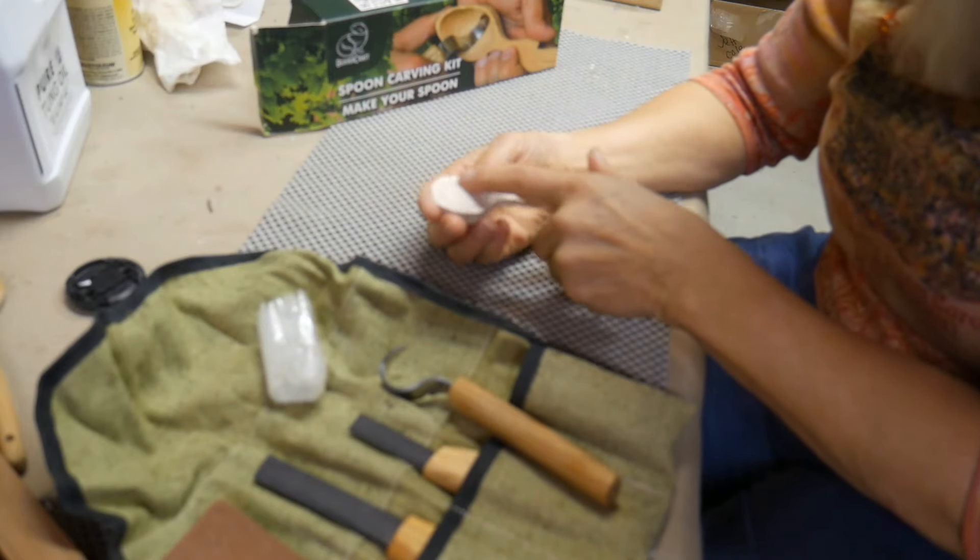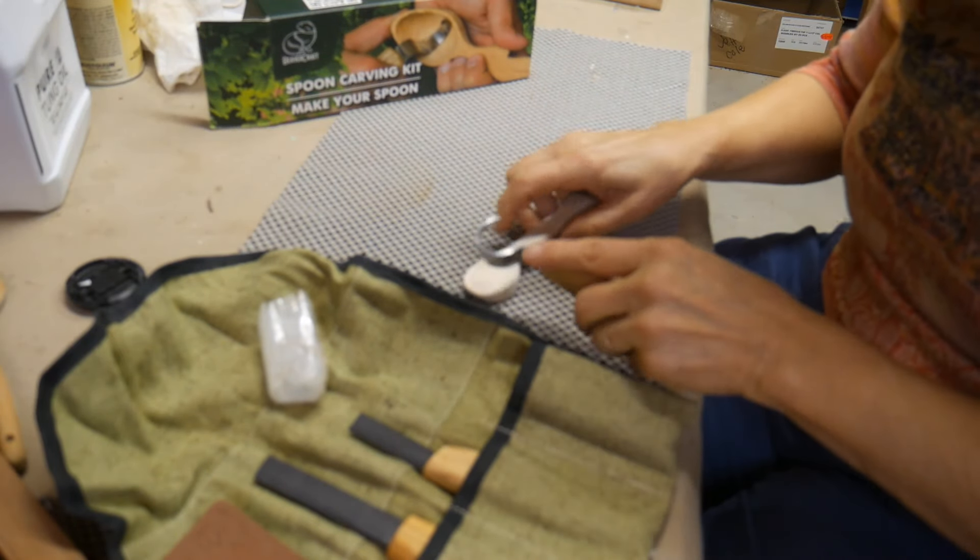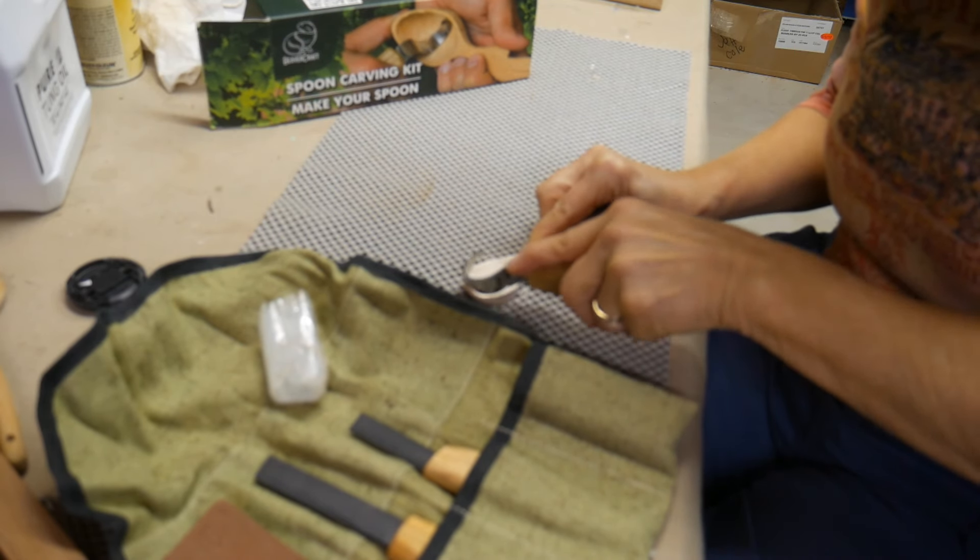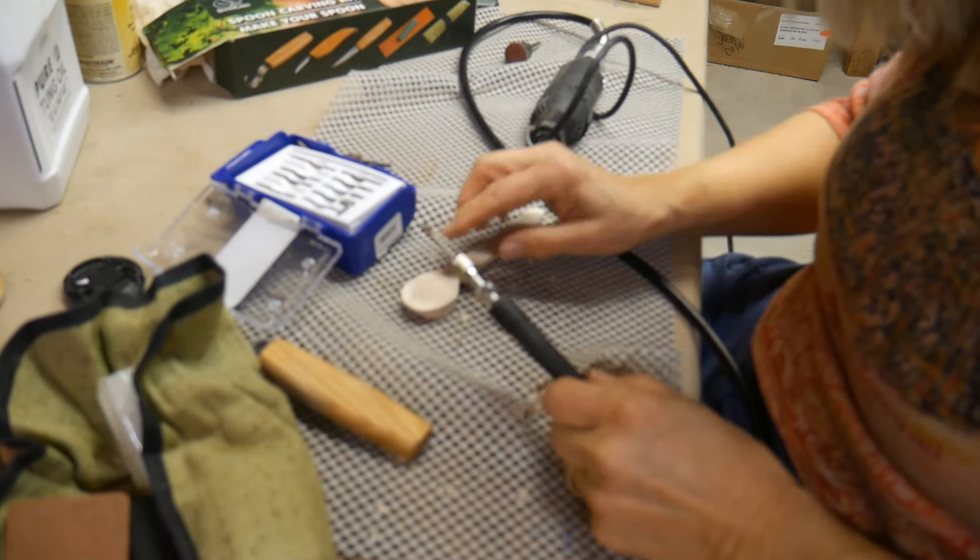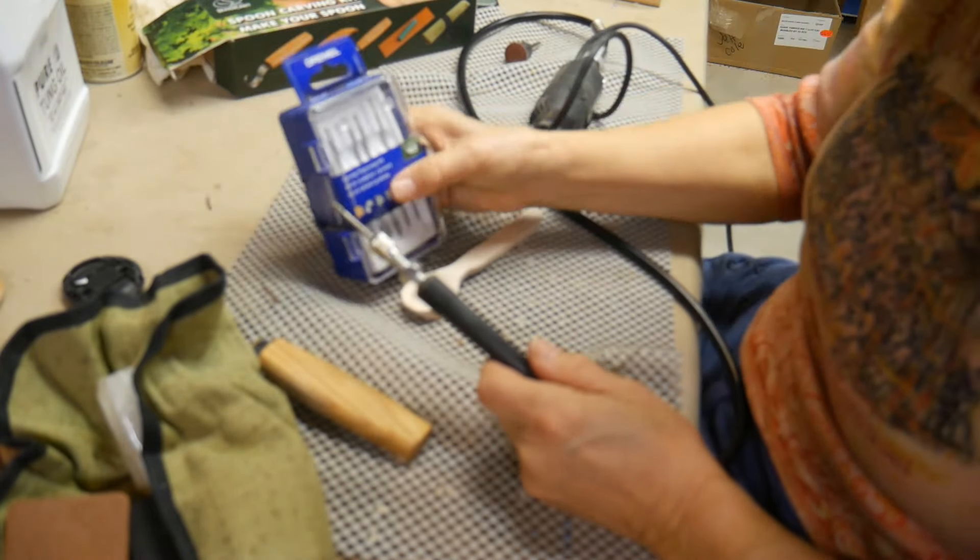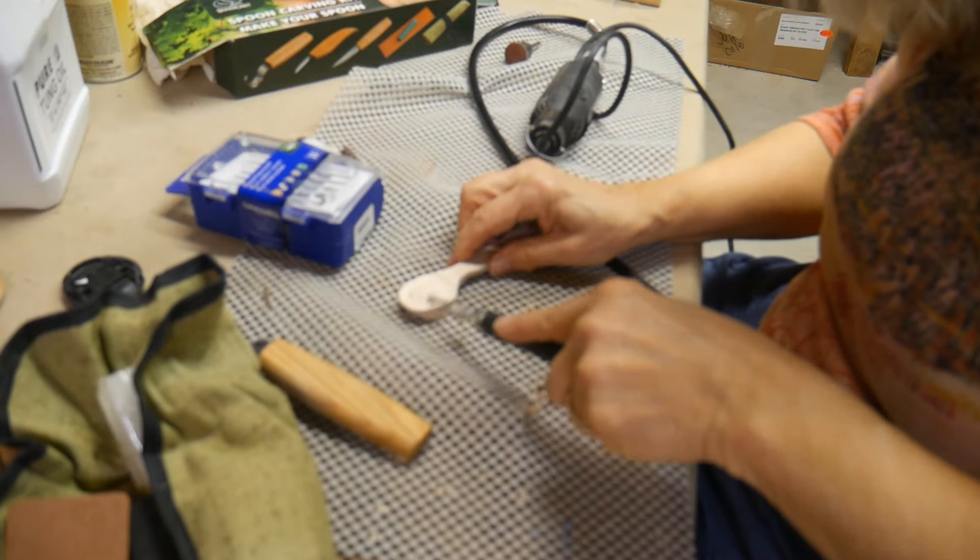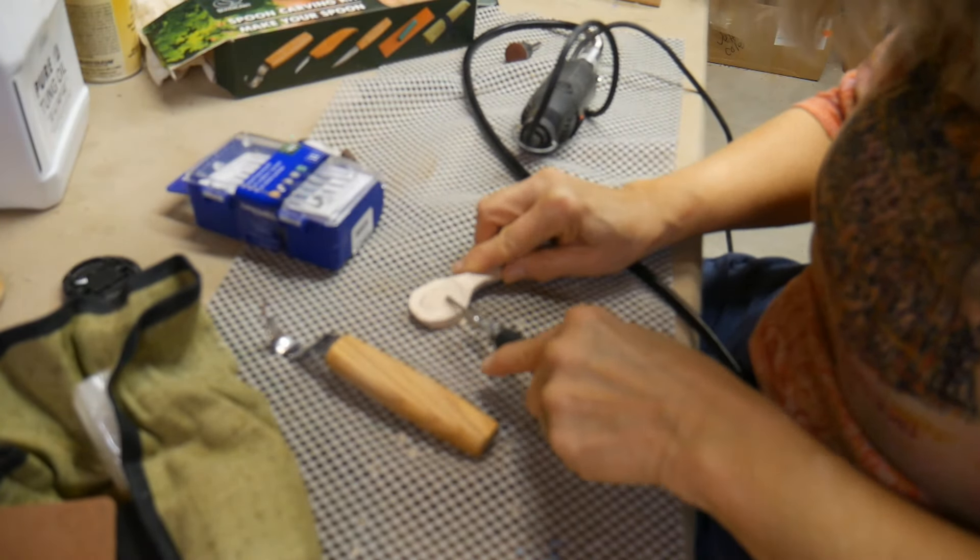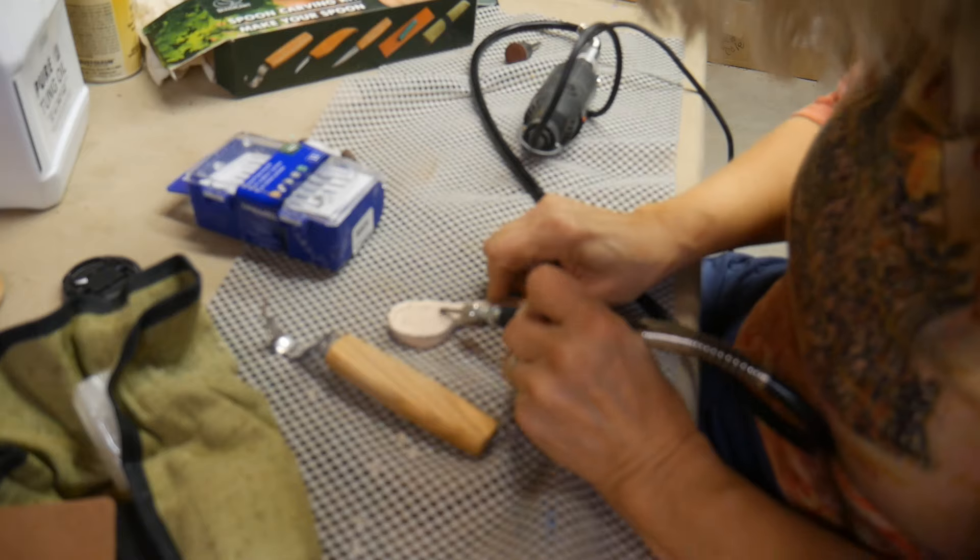I want to hollow out the bowl of the spoon, and I have this Beavercraft spoon carving kit I'm going to start with. Now this is hardwood and it's going to take a long time to do this. The spoon carving kit is taking a bit too long, so I'm switching to my Dremel, and I'm using a carving bit and I'm going to remove most of what I can this way, then I'll go back to my spoon carver. I find that this part takes a lot of practice and patience and finding that right tool that will carve out the spoon.